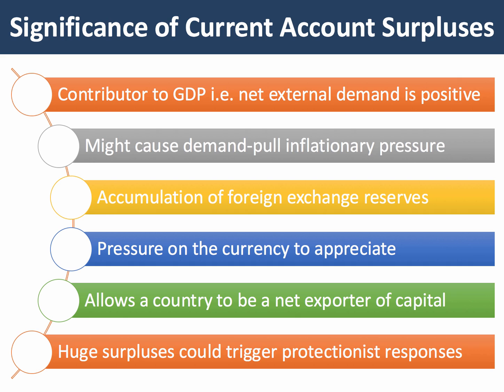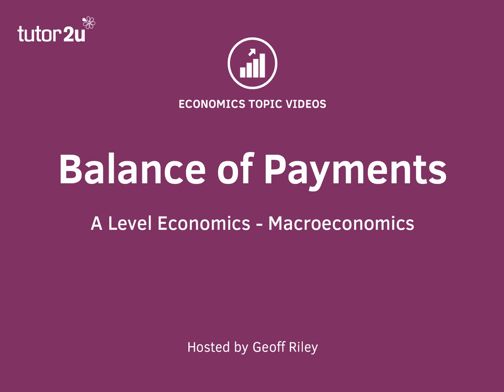Another significant effect of a big current account surplus is pressure on the currency to appreciate. If a nation is running a current account surplus, that allows them to be a net exporter of capital, which could be deposited in banks overseas or used to purchase foreign assets. However, a potential disadvantage of large surpluses is that they could trigger protectionist sentiment. So this has been a look at countries which run current account surpluses — on the surface very successful countries, but be able to analyse and evaluate the costs and benefits of running a balance of payments surplus on the current account.